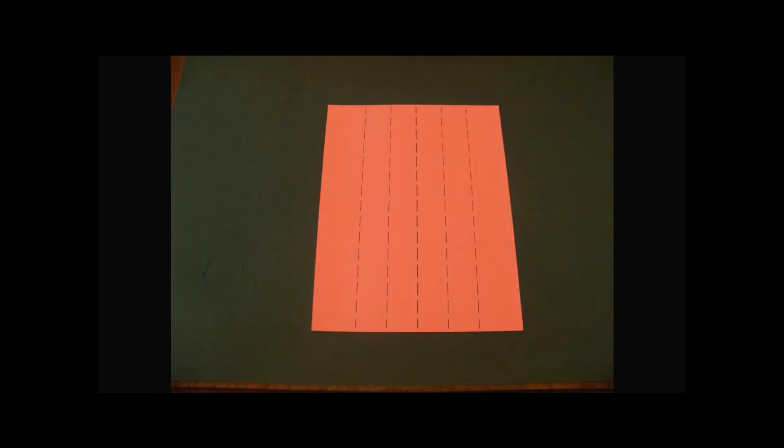Use the last three folded creases as guides to fold creases on the other half of the paper. This will complete all six required segments.